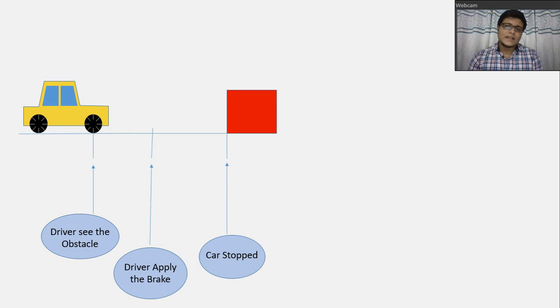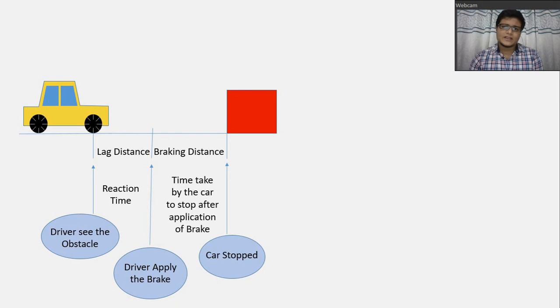So, the in-between moment when the driver see the obstacle and when the driver apply the brake, that is called as reaction time. And the distance covered by the car in the reaction time is called as lag distance. And when the car is moving after application of brake till it gets stopped is known as braking distance. And the time can be called as braking duration.